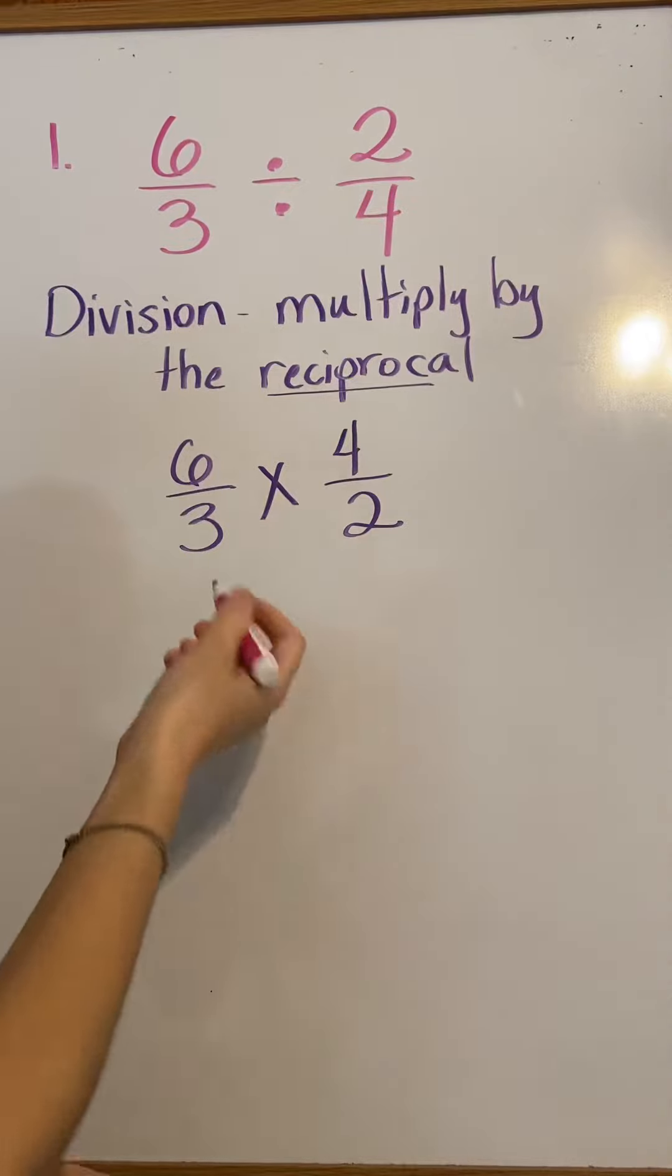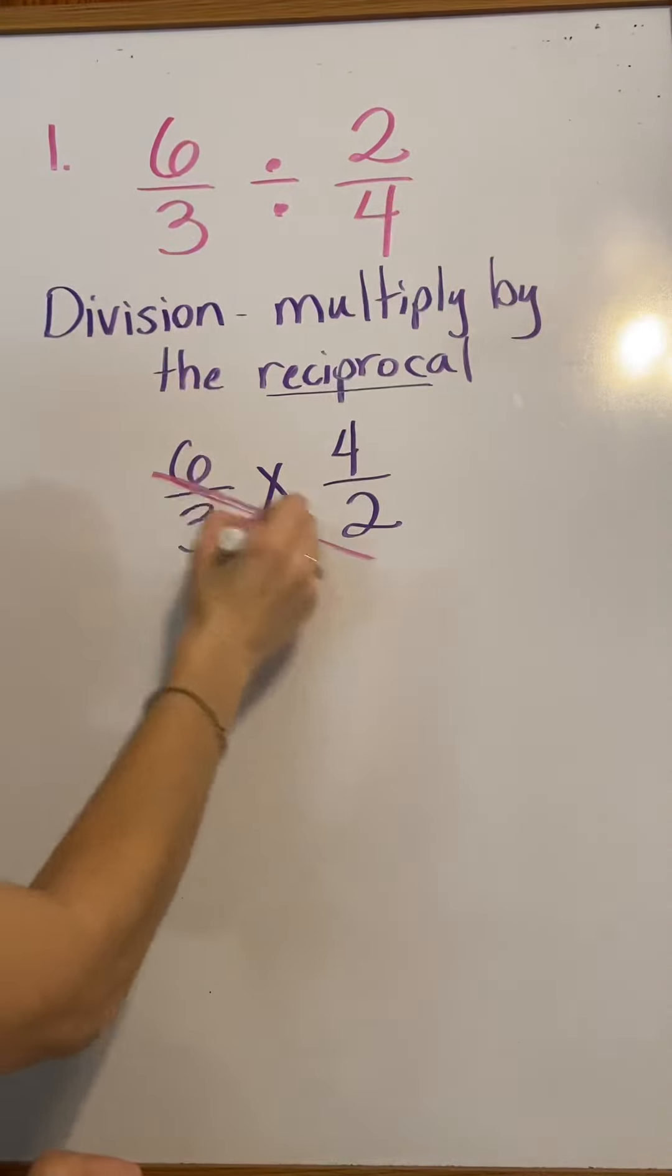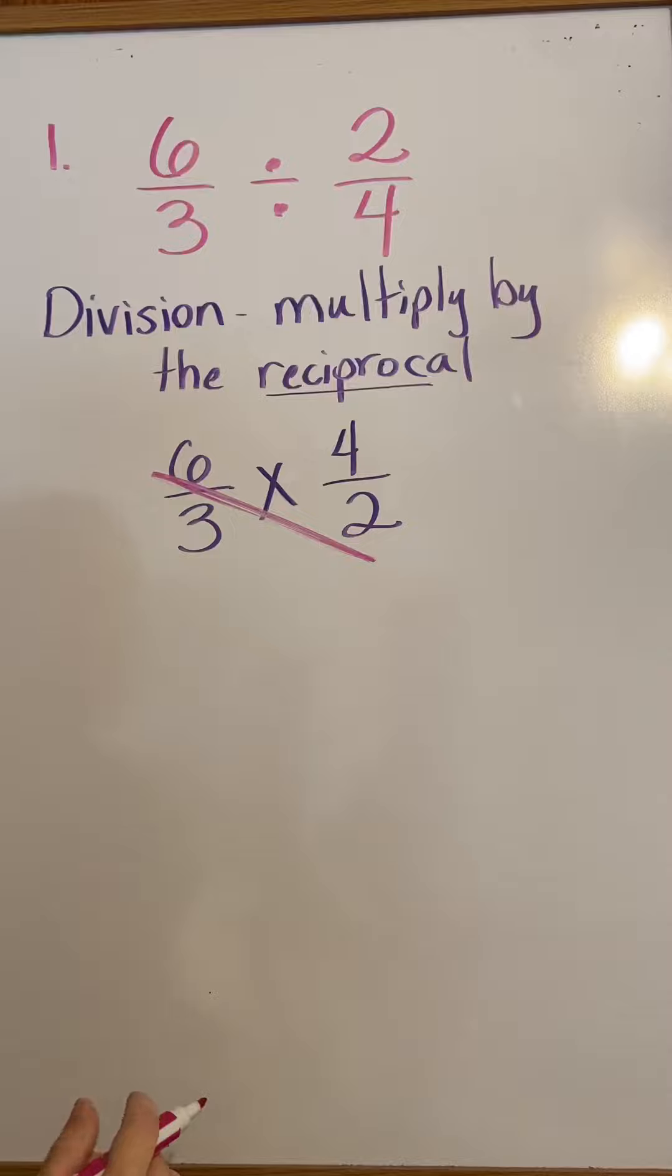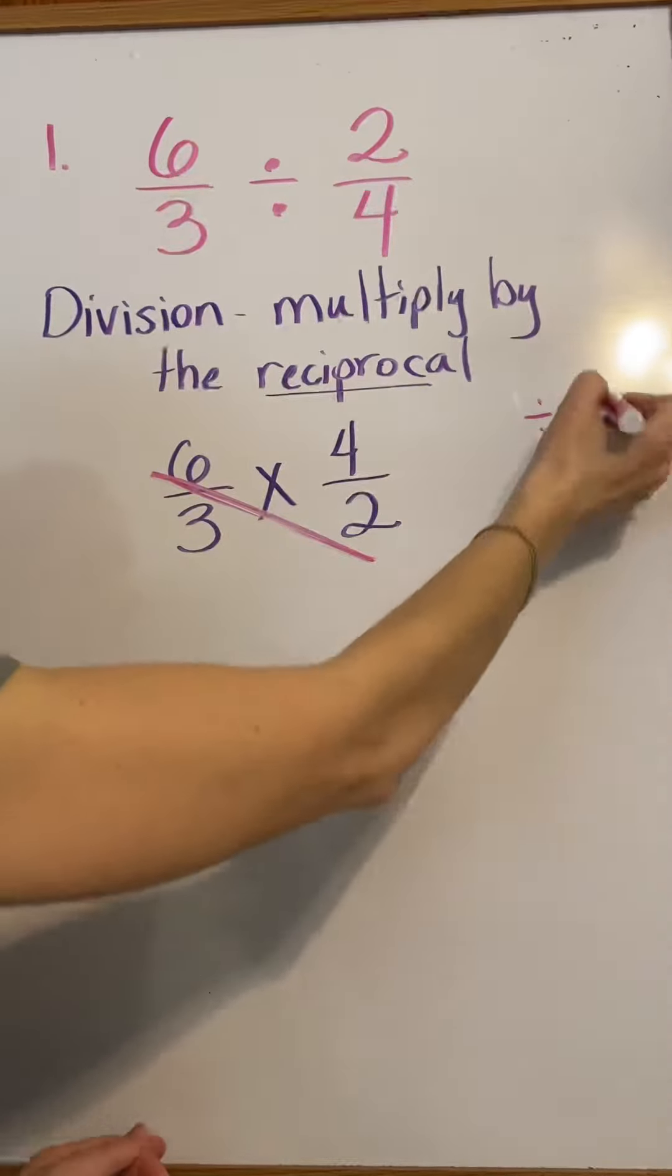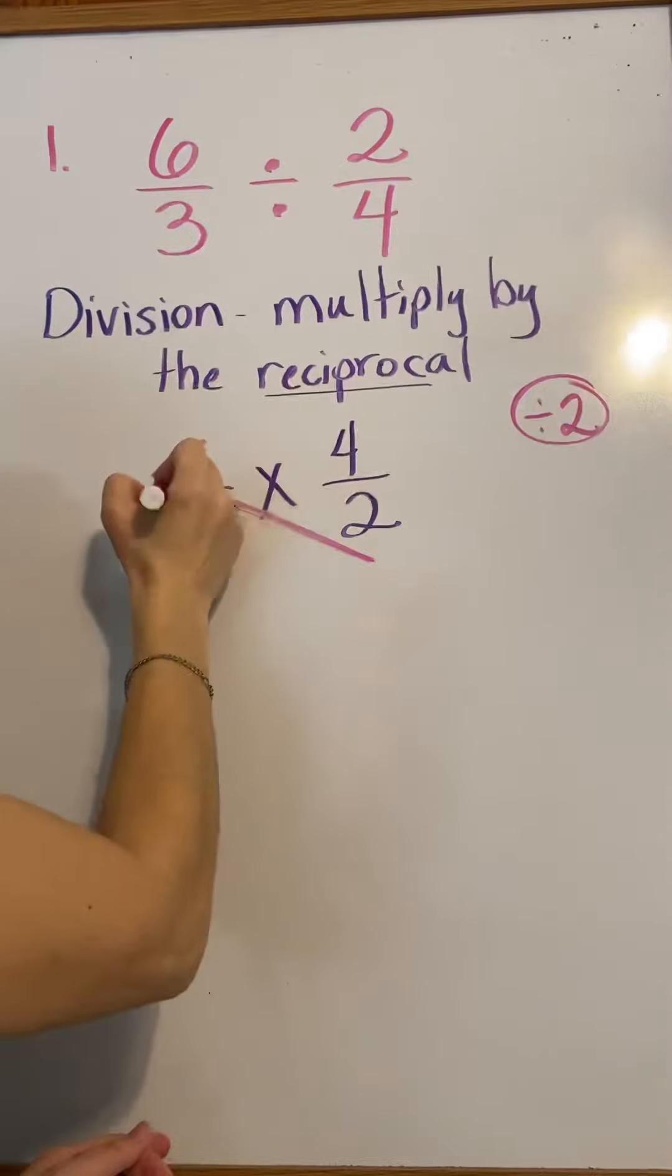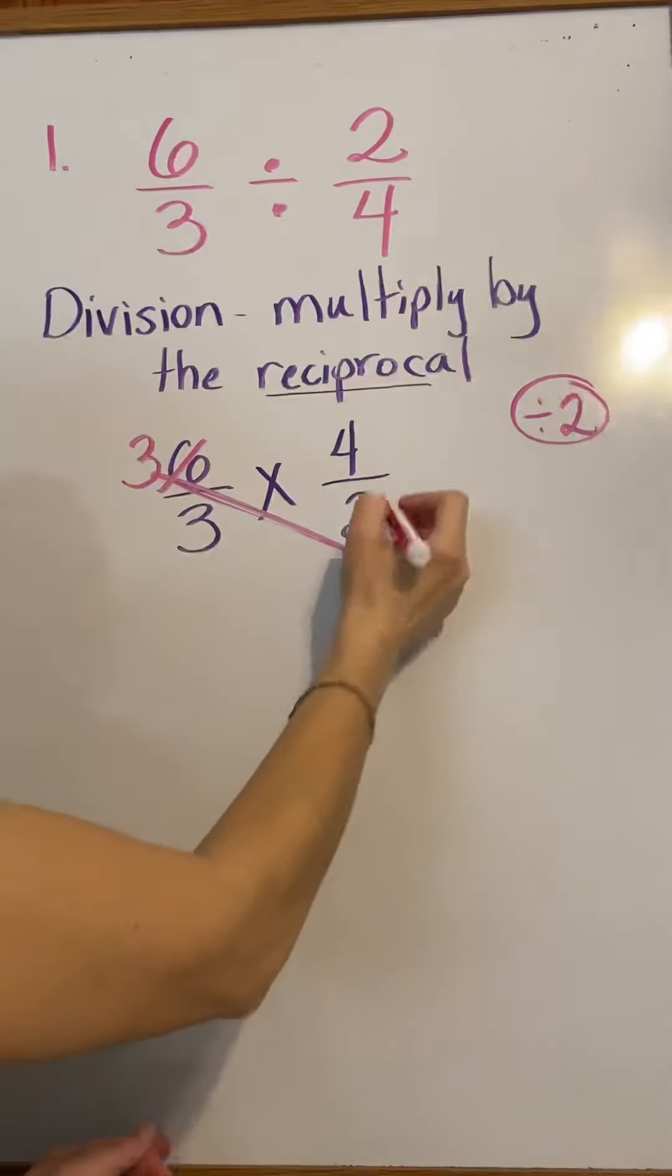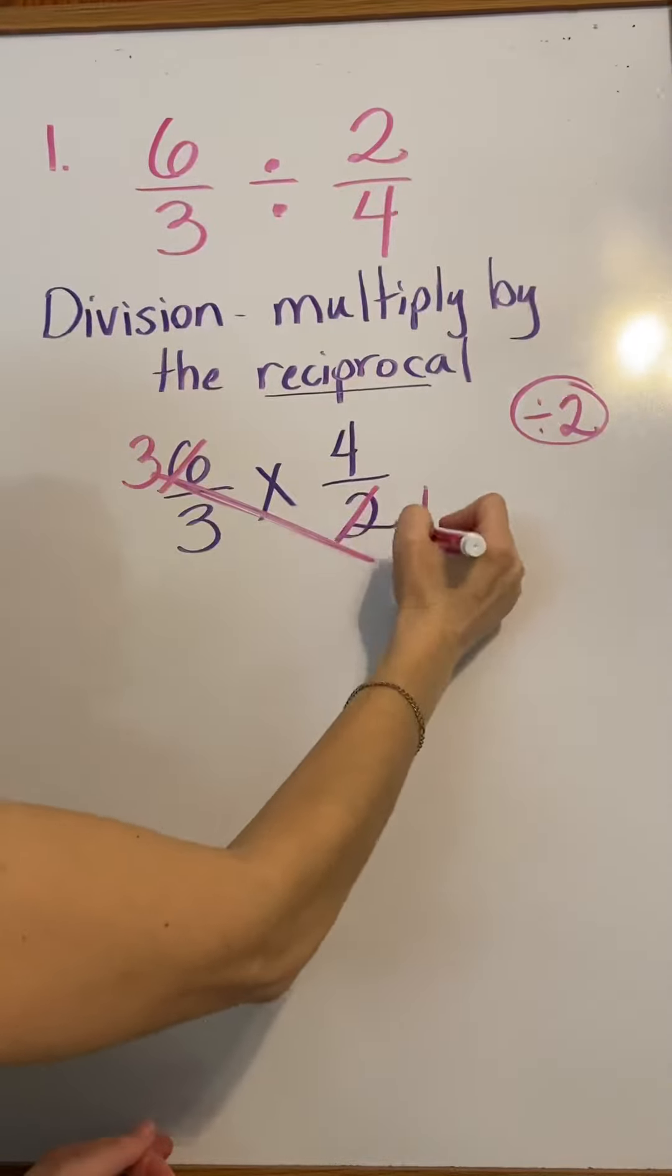We're going to look for our seesaw friends. 6 and 2, they have a common factor of 2. So, I'm going to divide 2 out of both of those. 6 divided by 2 is 3, 2 divided by 2 is 1.